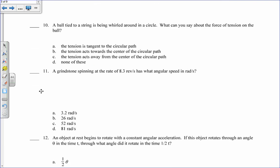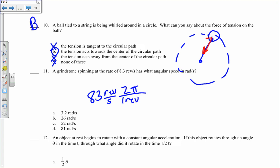Ball is tied to a string, whirled around in a circle. My string is providing the centripetal force. That centripetal force is always towards the center of the circle. It is not tangent. It's not away from the center. So the answer is b for number 10. Grindstone is spinning at 8.3 revolutions per second. I just want to convert it to radians per second. In one revolution, there are 2 pi radians. So 8.3 times 2 pi is 52.